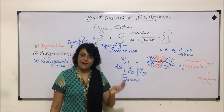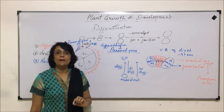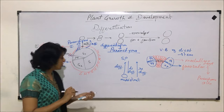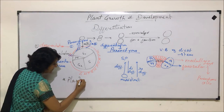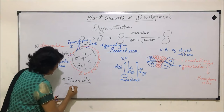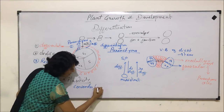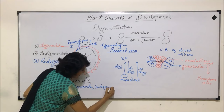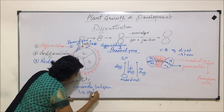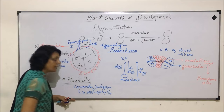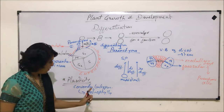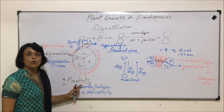So plant cells divide, then they grow, and they become differentiated. Now in this complete process we will talk about one more term: plasticity. In case of plants like coriander and larkspur, we find that they show heterophily — meaning having different types of leaves during different life periods. When a plant grows, we have seen coriander leaves; the shape of the leaf in a young coriander plant is different.